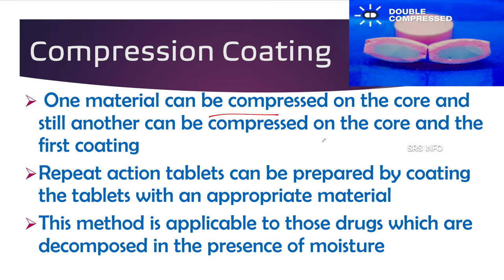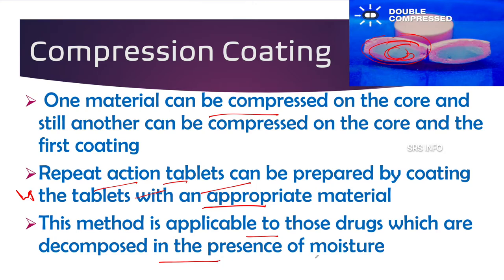One material can be compressed on the core, then another on top of that, giving a first coating, second coating, third coating — we can increase the layers by giving different types of coating by compression. This way, repeat action tablets can be prepared by coating the tablets with appropriate materials, and this method is applicable to drugs which are decomposed in the presence of moisture.